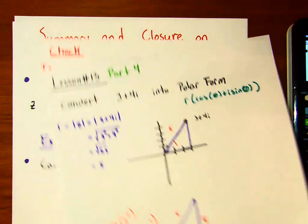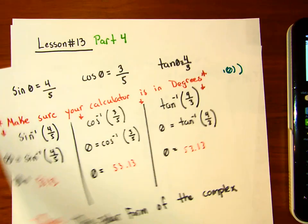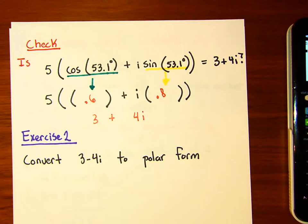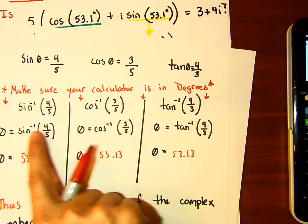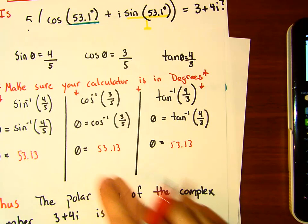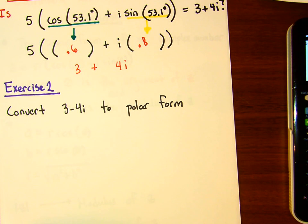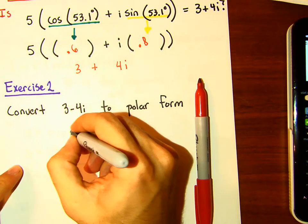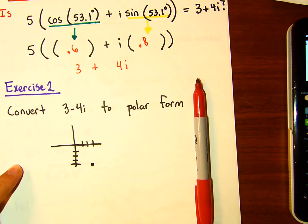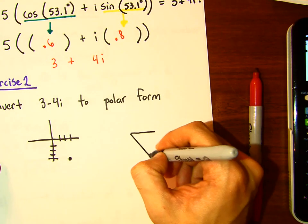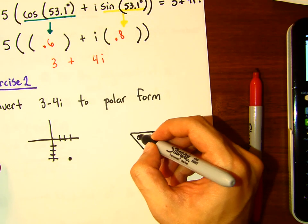Now I want you to take three minus four i and put it into polar form, using inverse trig functions to find the argument. Three minus four i is located at the point (3, -4) on the complex plane, making a triangle with sides three, four, and hypotenuse five.